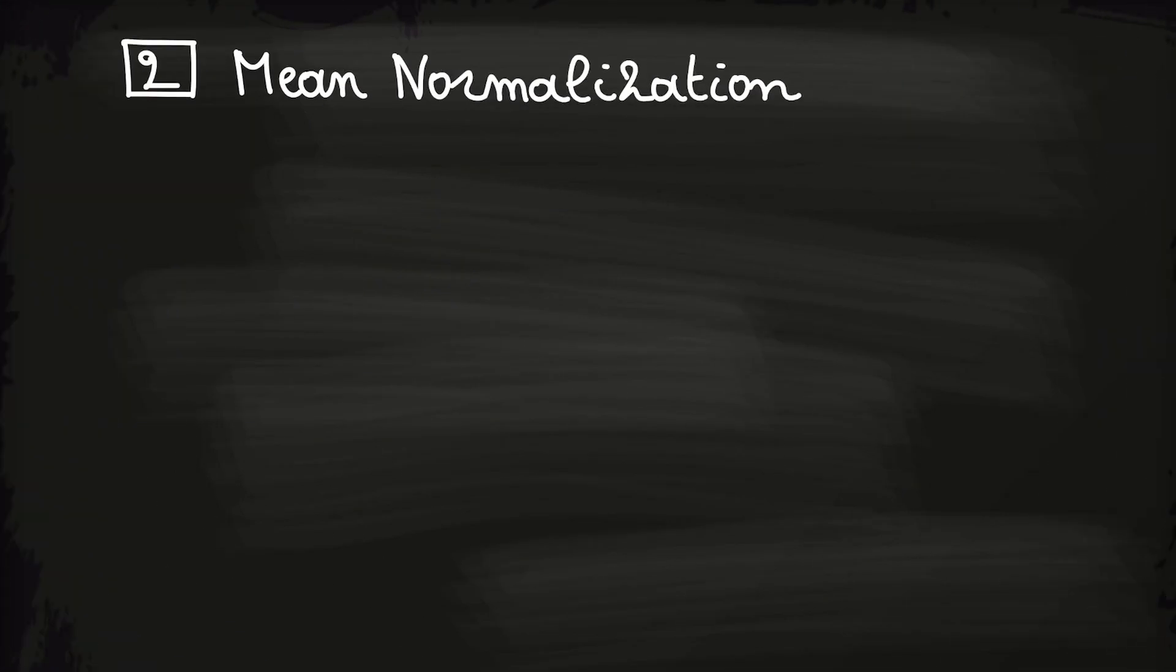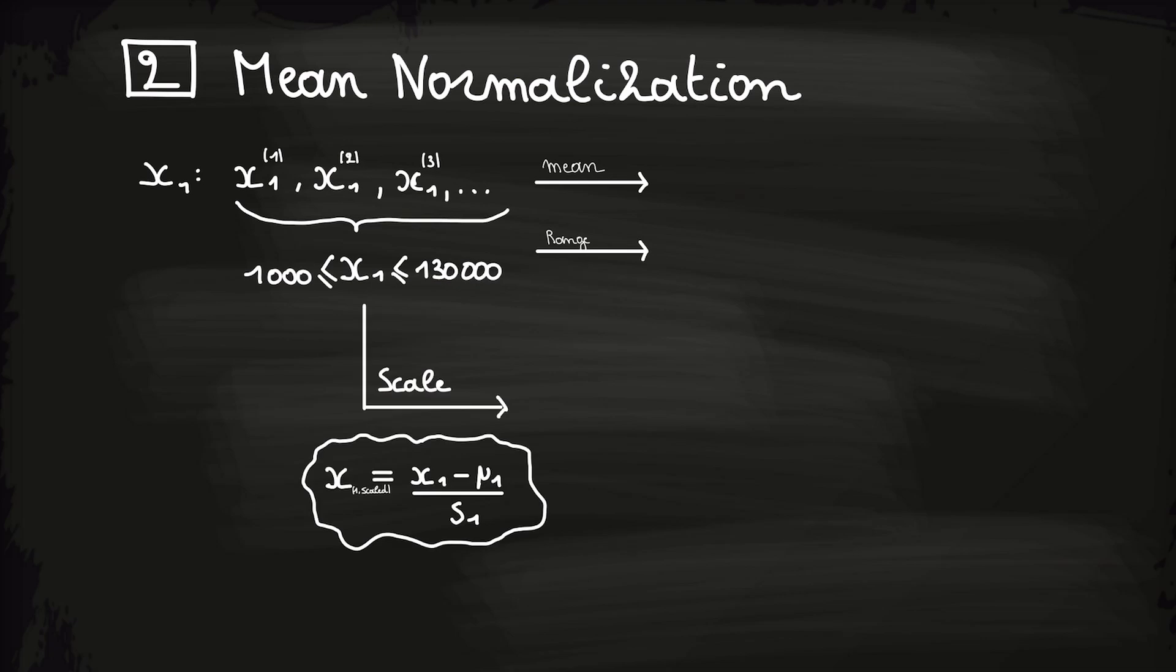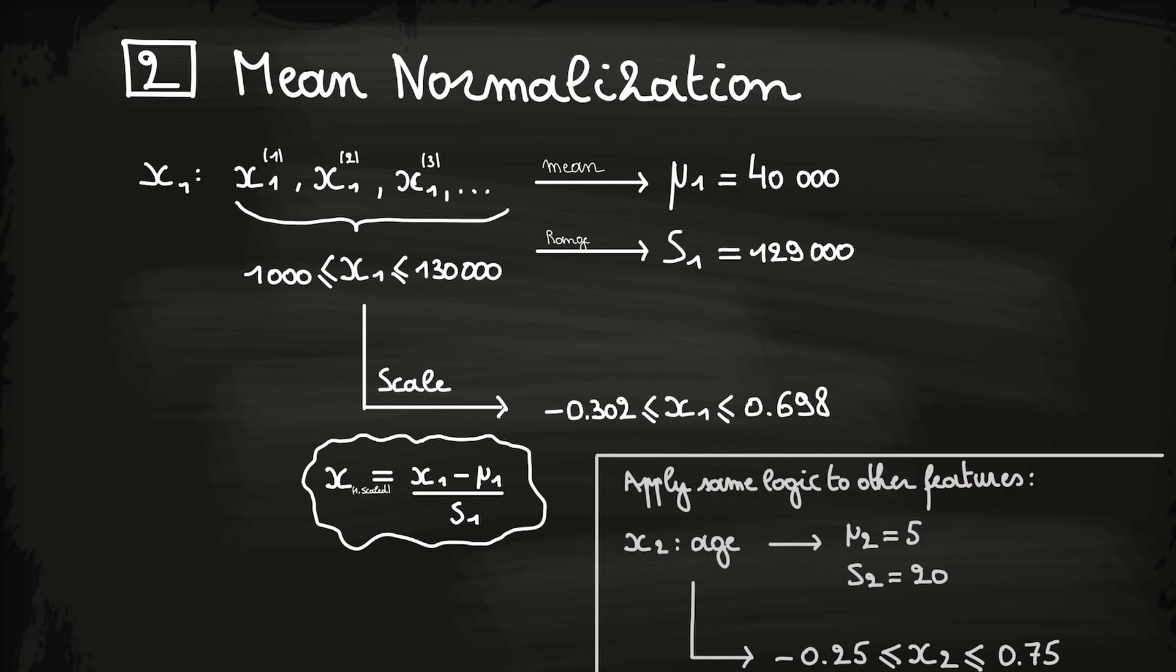A second method to scale our features is by applying mean normalization. This is done by taking all values of a specific feature, computing the mean and range of this feature, and then you apply following scaling technique to all the values of that feature. For example, let's assume that the mean of x1 is 40,000 and the range is basically the largest value that occurs minus the smallest value that occurs. So, in our case we have a range of 129,000. Now we apply this scaling transformation to every value of x1 and we end up with all values of x1 between these two values. Now we can apply this same logic to all other features. Then we end up with all features being in a similar kind of range.